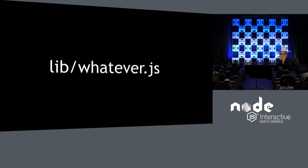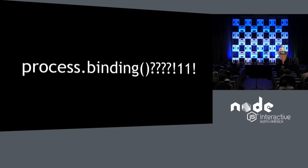One secret about Node Core is that these files are pretty understandable and approachable. The thing that usually trips people up when they first look at them — at least from anecdotal experience — is actually misunderstanding the API or not understanding how modules load. While reading these files, you're going to find stuff you may not know exists, like process.binding, which I don't think is actually documented.